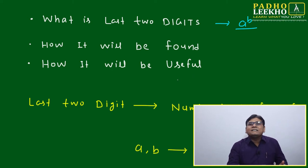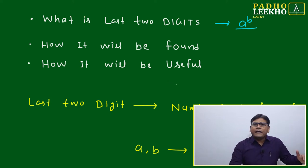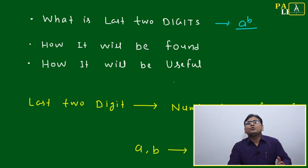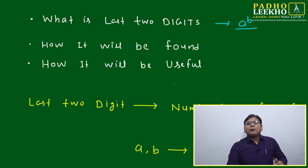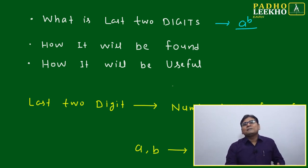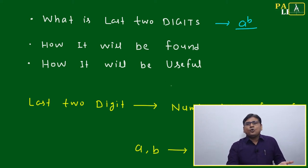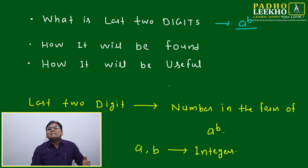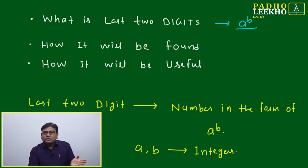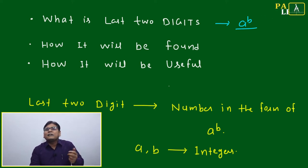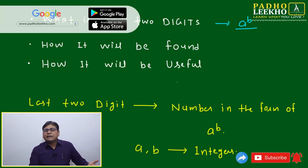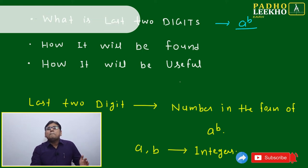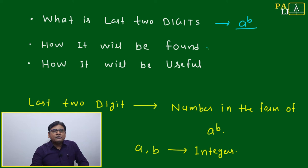Just as there is a pattern of unit digits — called the power cycle — there is a pattern for last two digits as well. The power cycle deals with the pattern of the last digit, but this session deals with the pattern of the last two digits. This pattern follows a certain algebraic or numerical pattern. It depends on the unit digit — whether the number ends with 0, 1, 2, 3, 4, and so on.